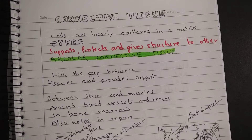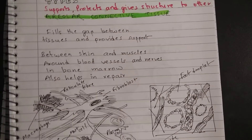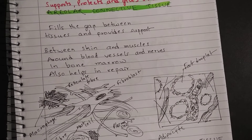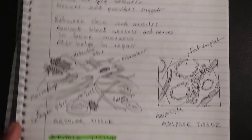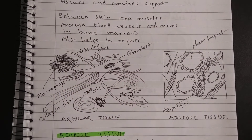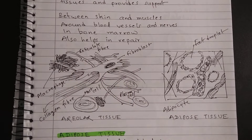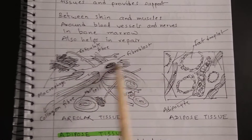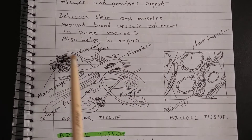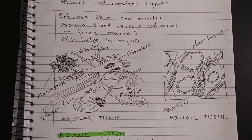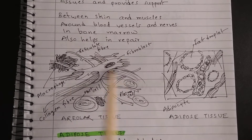Areolar connective tissue fills the gap between tissues and provides support to organs. It is found between skin and muscles, around blood vessels and nerves, and in bone marrow. It also helps in repair. In the diagram of areolar connective tissue, the background is the matrix and there are different components: fibroblasts, collagen fibers, macrophages, and plasma cells. You can see that the components are loosely packed, not densely packed.